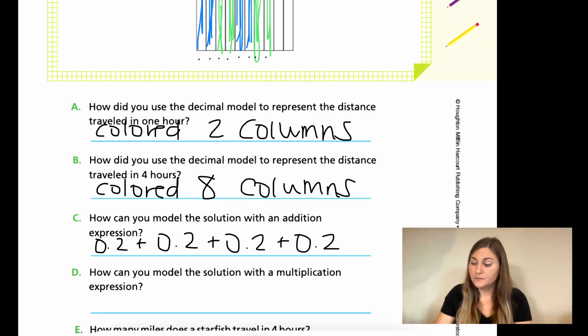Then how would you do it with multiplication? So instead of writing it out four times, we're just doing times four. So 0.2 times four.